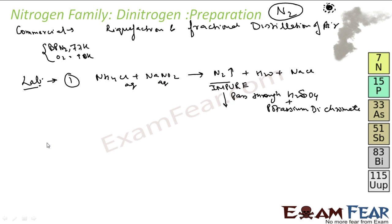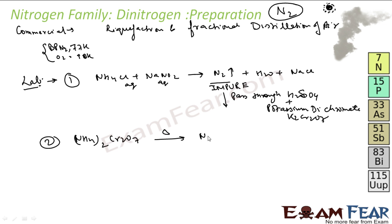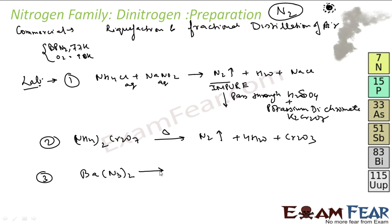The second way to prepare Dinitrogen in the lab is by thermal decomposition of Ammonium Dichromate, (NH4)2Cr2O7. When heated, it gives Nitrogen gas, water molecules, and Cr2O3. If you want very pure Nitrogen, you can obtain it by thermal decomposition of Sodium or Barium Azide. For example, heating Ba(N3)2 gives Barium plus 3N2 — this is pure Nitrogen.